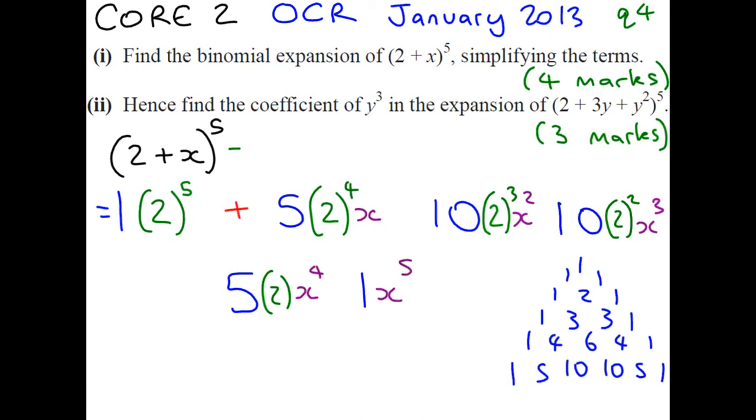So there are our terms. Obviously, we need to now simplify, and it's going to simplify to 32 plus 5 times 2 to the 4, which is 80, plus 8 times 2 cubed, which is 80, and don't forget your x values, x, x squared.